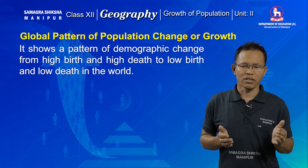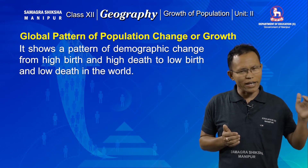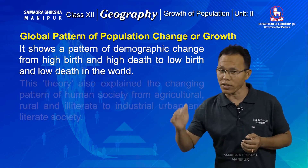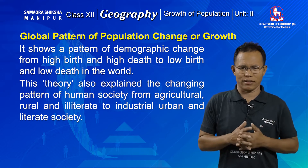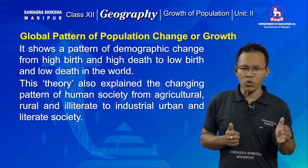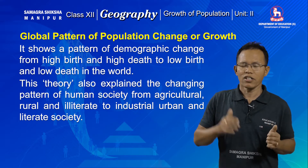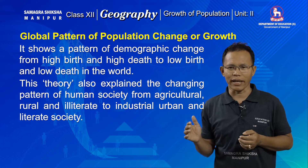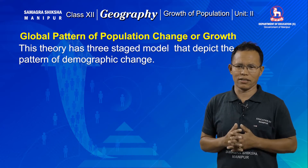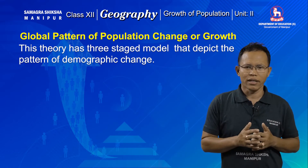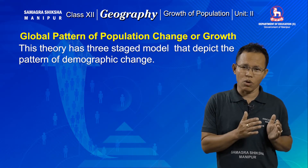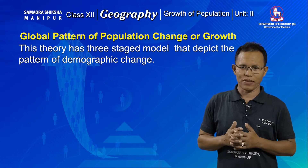The demographic transition theory was based on the change in mortality and its resultant change on the population of the world. It shows the pattern of demographic change from high birth and high death to low birth and low death. This theory also explains the change in human society from agrarian, rural, and illiterate to industrial, urban, and literate society. This three-stage model has three distinct stages, each representing a variation of the demographic pattern of the world.